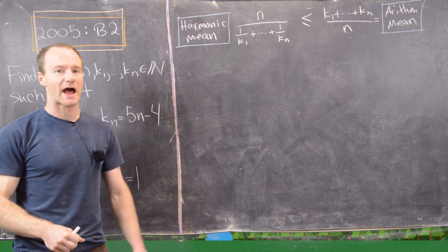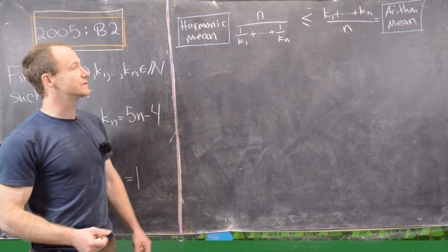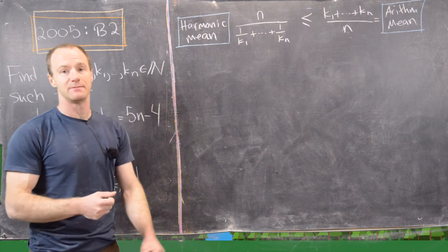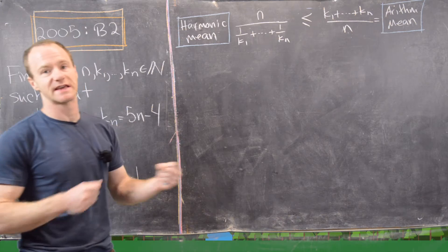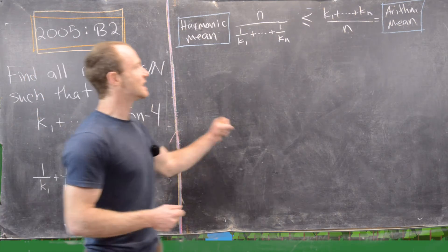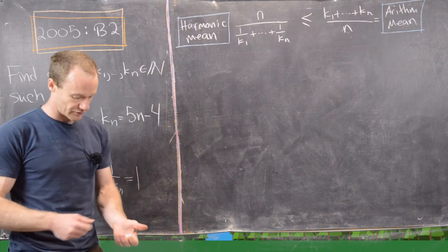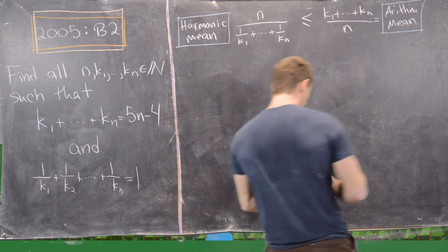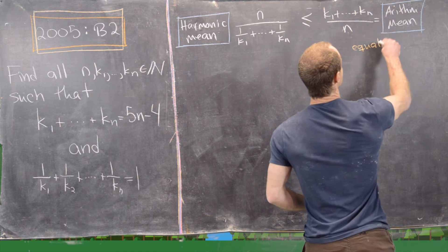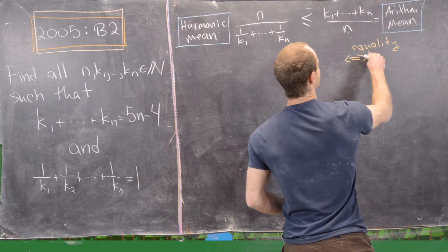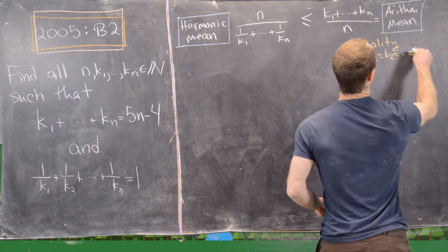So now we're back. We're going to use the harmonic and the arithmetic mean part of that big inequality. We know that the harmonic mean of the numbers k₁ through kₙ must be less than or equal to the arithmetic mean of the numbers k₁ through kₙ.